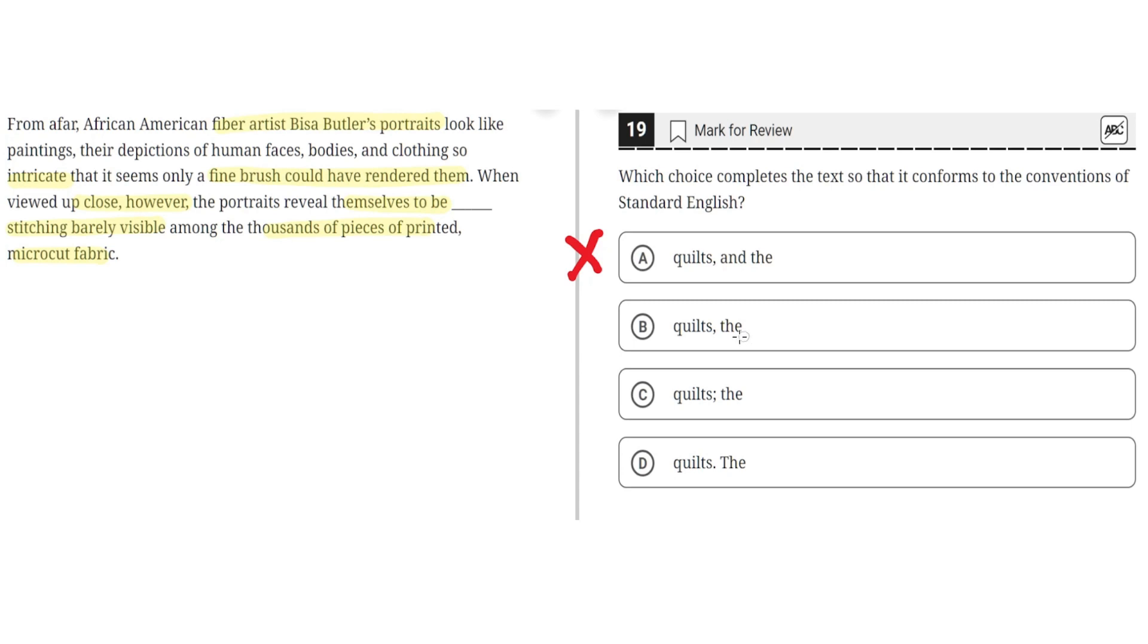B. Quilt, comma, the. This is correct because this properly splits the sentence into two parts, where the first part is the main clause, and the second part is the supplementary phrase, and the comma here accurately separates the two.